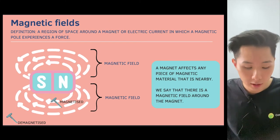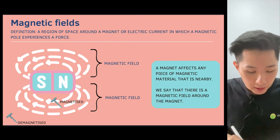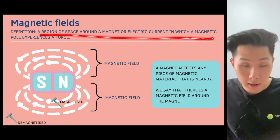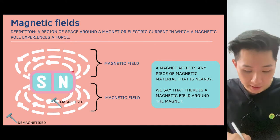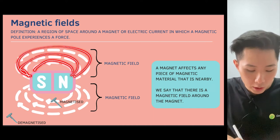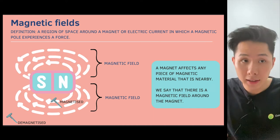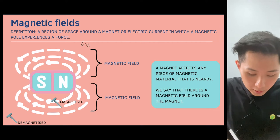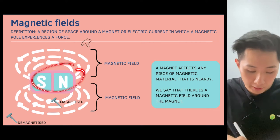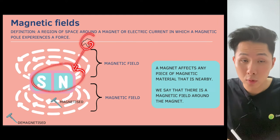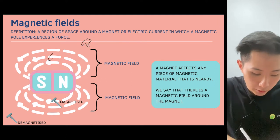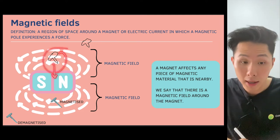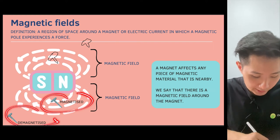Previously we mentioned the term magnetic field. A magnetic field is a region of space around a magnet or electric current in which a magnetic pole experiences a force. The way I see it is that it is a territory in which it can magnetize certain materials. So if I were to put a nail outside of the magnetic field of this magnet, it will not get attracted. But if I put a nail within the magnetic field, it will get attracted — as shown in the diagram here.